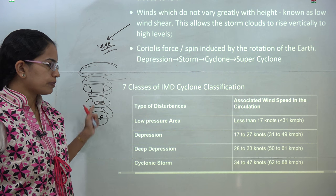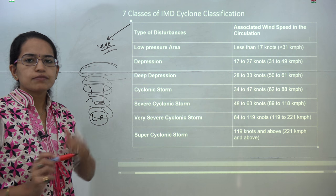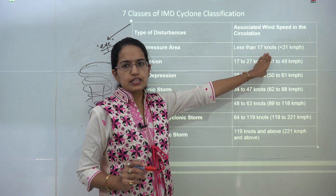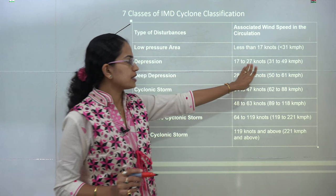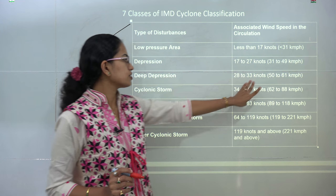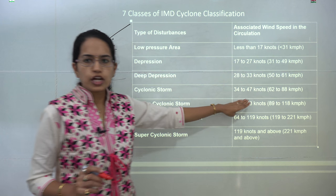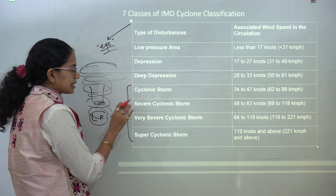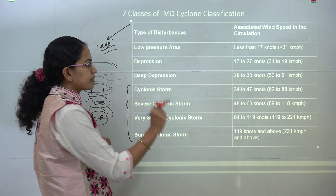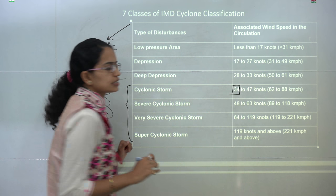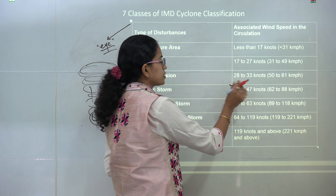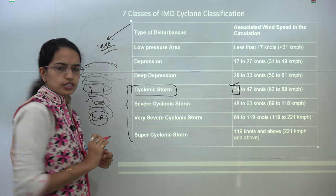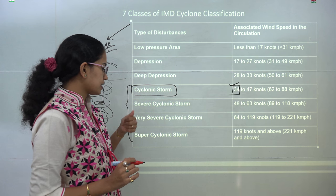The IMD or Indian Meteorological Department has classified seven categories. If the wind speed is less than 17 knots it is a low depression area; 28 to 33 knots is a deep depression; and above 34 knots it is considered a cyclonic storm. Cyclones in the Indian Ocean are named only after the wind speed reaches 34 knots — once they attain the stage of cyclonic storm — and then you have severe cyclonic, very severe cyclonic, and super cyclonic stages.